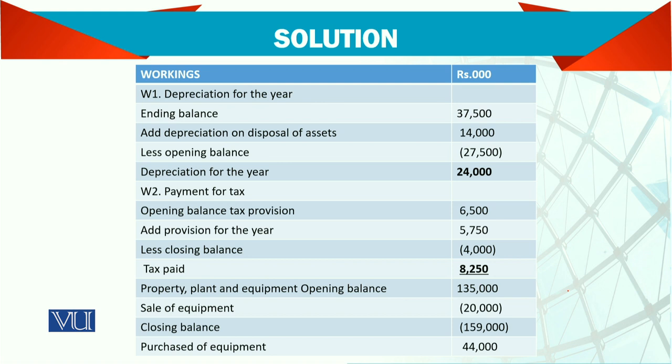Working number three: property, plant and equipment. Similarly, opening balance, then deduct the sale of equipment balance, and the closing balance is 159. The reason it increased is because you bought non-current assets worth 44,000.